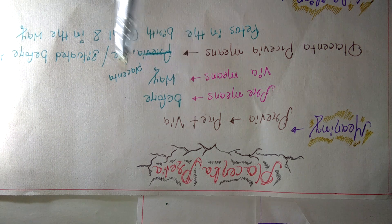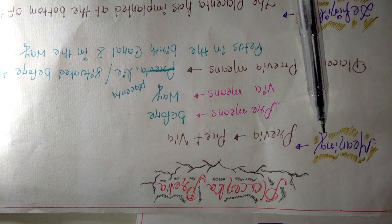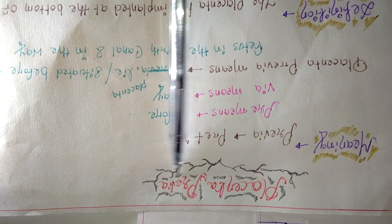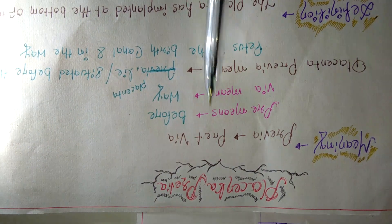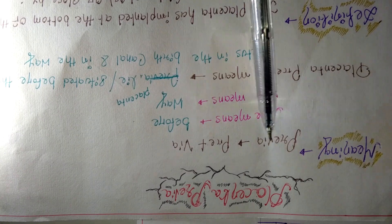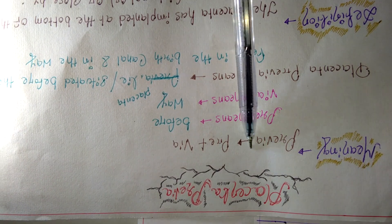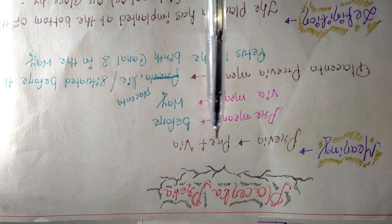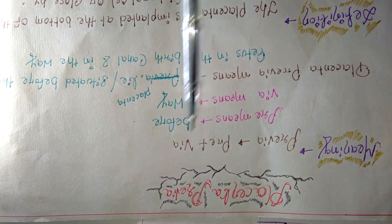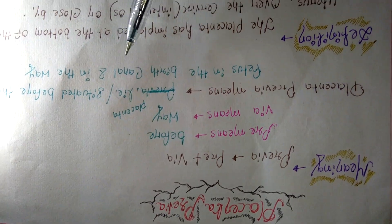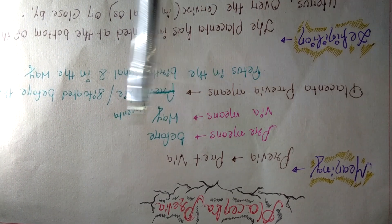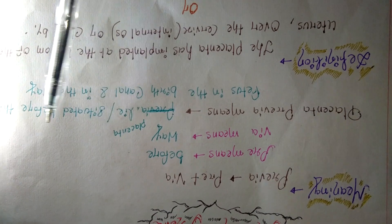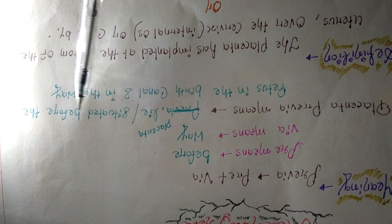Let's first understand the meaning of 'previa.' We can divide this word into two portions: 'pre' and 'via.' Pre means before and via means way. So previa means 'before the way.' Placenta previa therefore means the placenta lies or is situated before the fetus in the birth canal.